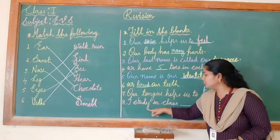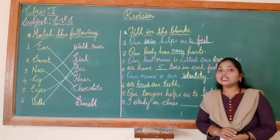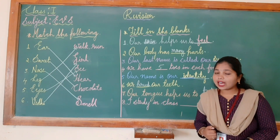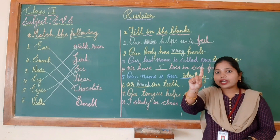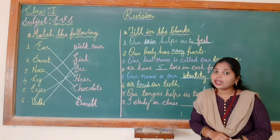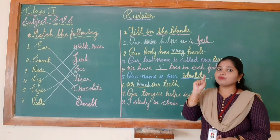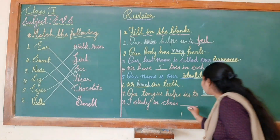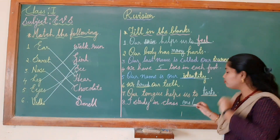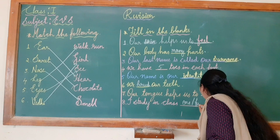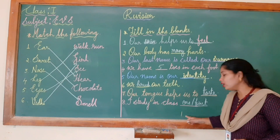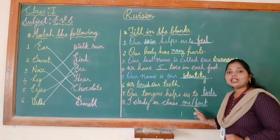Next: I study in class dash. Children, in 'About Me' you have learned — you all are studying in class one. So I will write 'one' here. I study in class one. Or you can also write 'first' — I study in class first. Both meanings are the same.